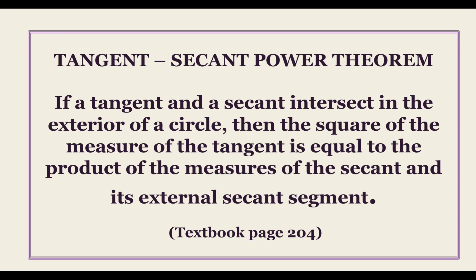What are our clue words? There is a tangent, there is also a secant, and this tangent and secant meet outside of the circle, forming two segments of the secant: the outer part and the whole secant. And the relationship that exists between these elements is what we are proving.